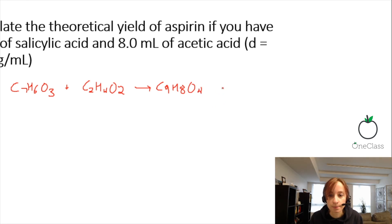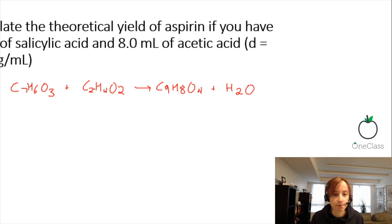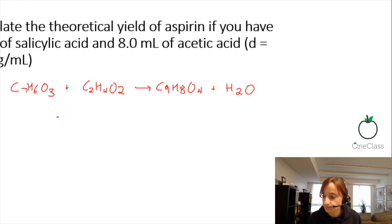If you draw out the mechanism and the actual structures, you end up releasing water, so you lose H2O. We should double-check that the equation is balanced: 9 carbons on each side, 10 hydrogens on each side, and 5 oxygens on each side. So no additional balancing is needed.